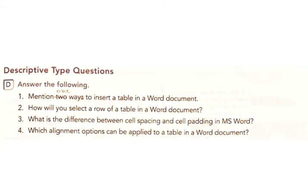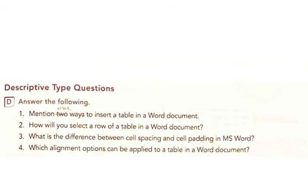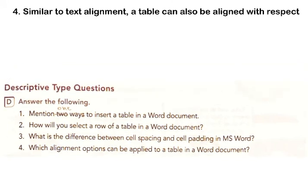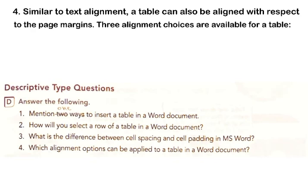4. Which alignment options can be applied to a table in a Word document? Answer: Similar to text alignment, a table can also be aligned with respect to the page margins. Three alignment choices are available for a table: left, right, and center.